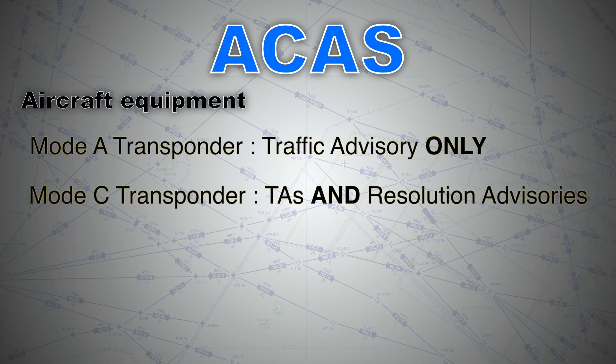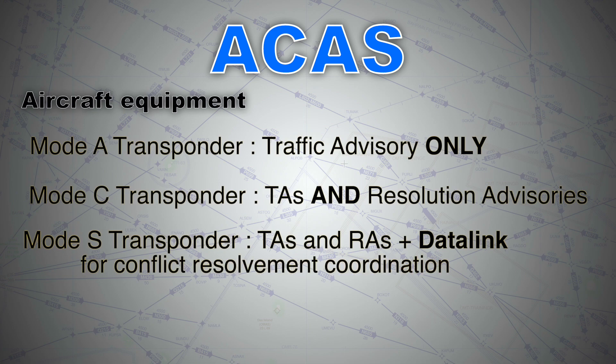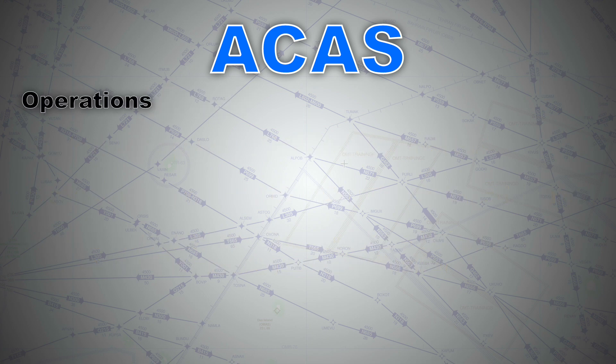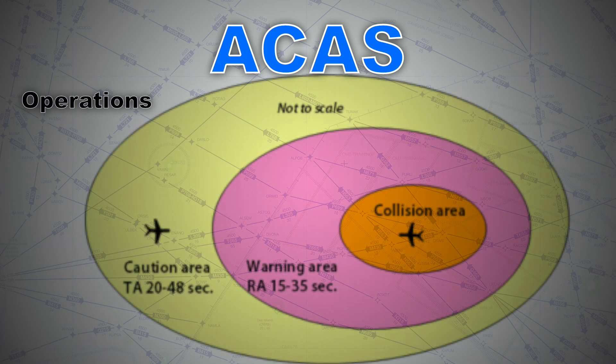When a Mode C transponder is equipped, intruders broadcast height information to TCAS and the system becomes three-dimensional, capable of giving both TAs and RAs. With Mode S transponders, TCAS-equipped aircraft also broadcast height information and allow a discrete data link to be established between the two aircraft, enabling avoidance maneuvers to be mutually resolved.